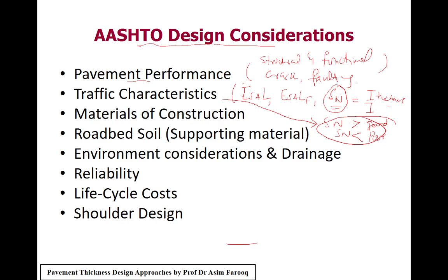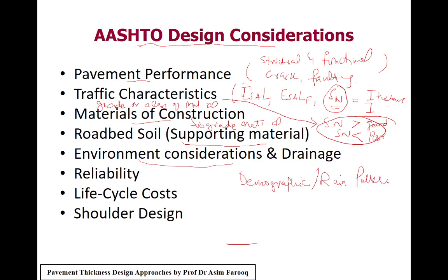Other design considerations include: material of construction — what type of material is needed in the top and lower layers; roadbed soil condition — referring to subgrade material performance, characterized by CBR value, resistance value, and modulus of resilience; environmental and drainage conditions — how much capacity the pavement has to drain off water such as rain and snow; and finally, reliability, life cycle cost, and shoulder design.